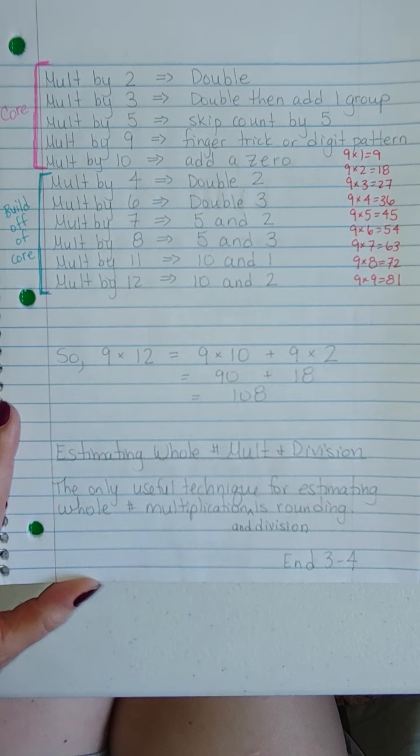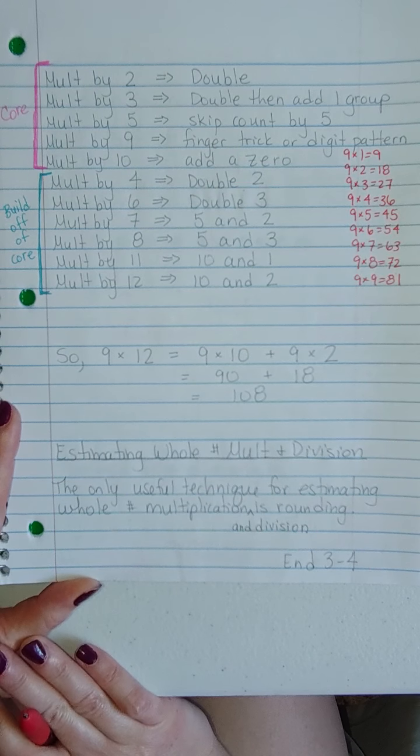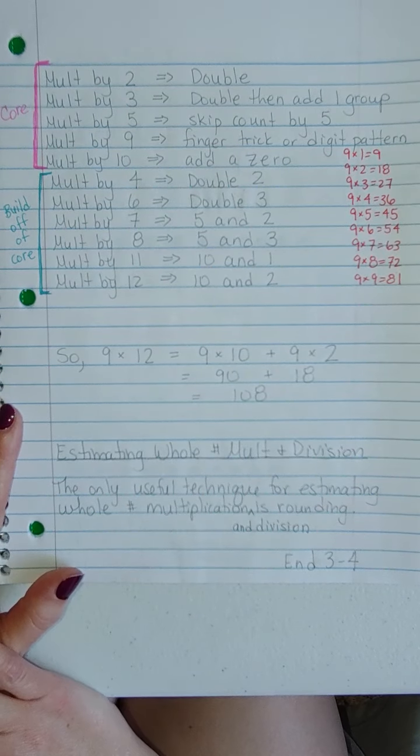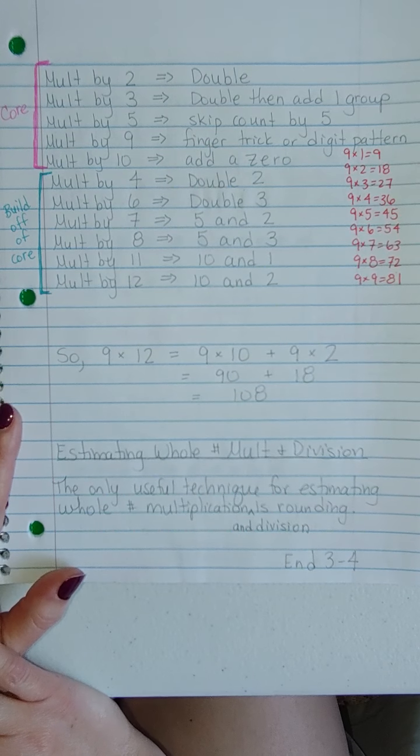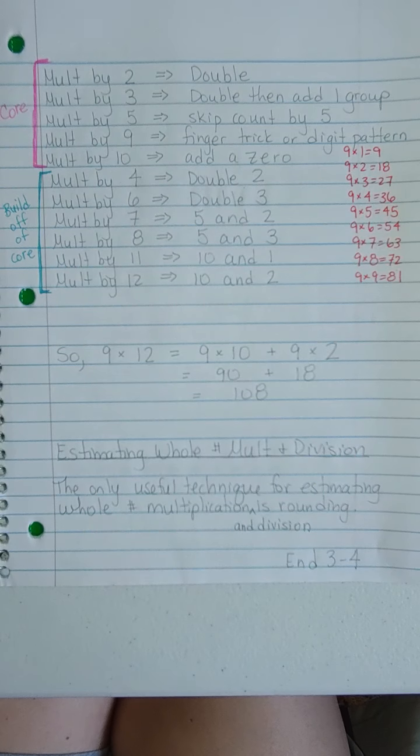All right. Last up, the estimating. This one, pretty much the only useful one is just rounding. So I'm just not even going to bother with that because it's just your typical rounding. All right, that concludes section 3-4.